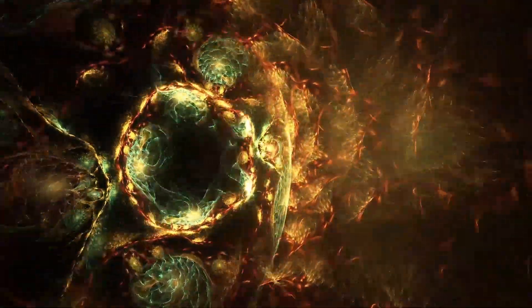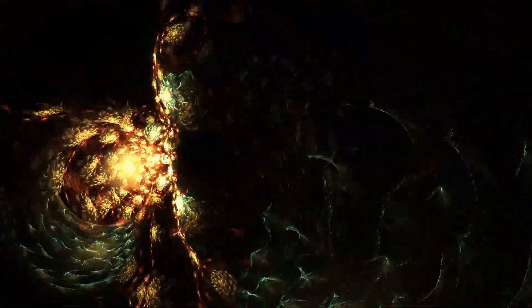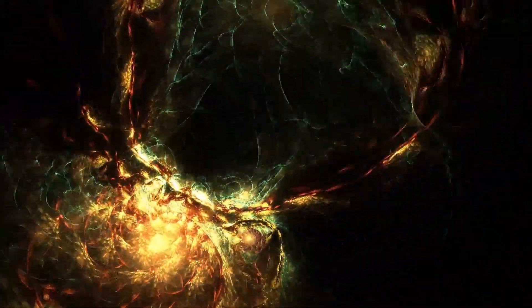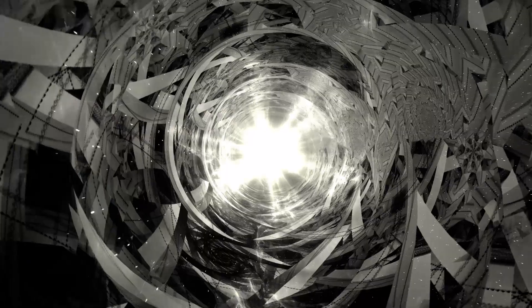Fractals are defined by their fractal dimension. A fractal line drawn on a piece of paper will have a dimension between one and two. The greater the complexity of the line, the closer its dimension is to two.